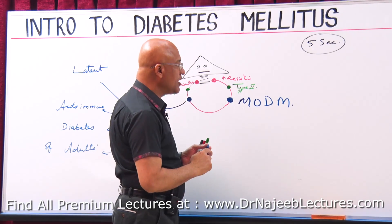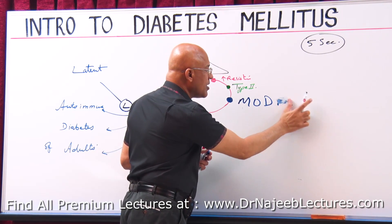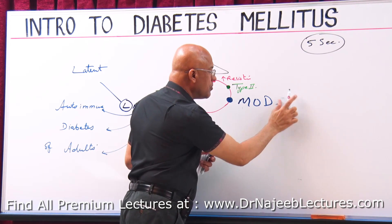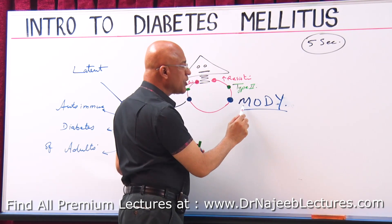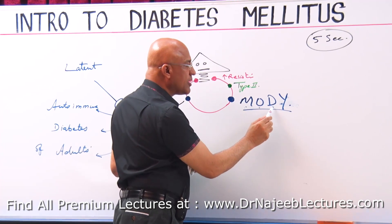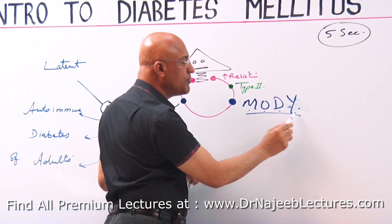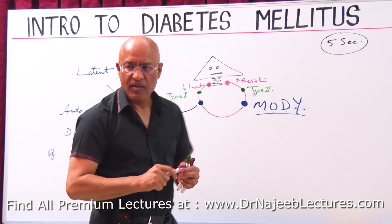If this Type 2-like disease starts at a very young age — when classically it should start at an older age — we call it Maturity Onset Diabetes Mellitus, or MODY, which stands for Maturity Onset Diabetes of Young people.